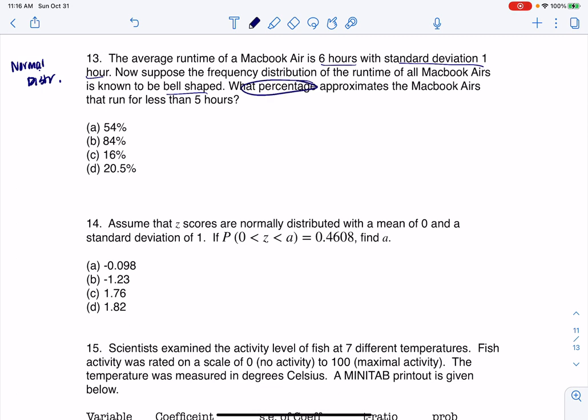I've got a P word here, I want a probability, and I want less than five hours. So my variable in this case is these MacBook Air runtimes. The units are hours. I am told that this is normally distributed with a center of six and a standard deviation of one.